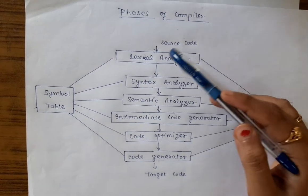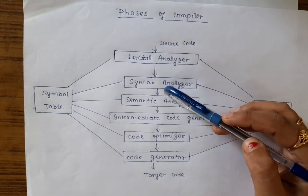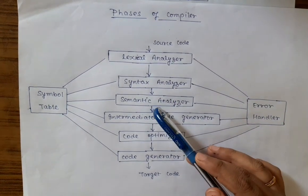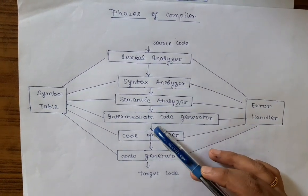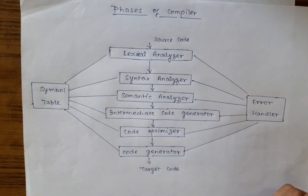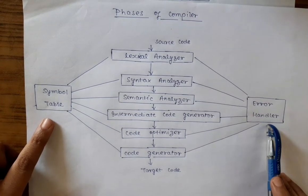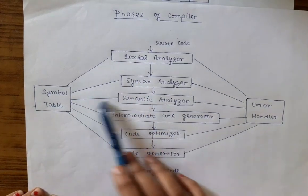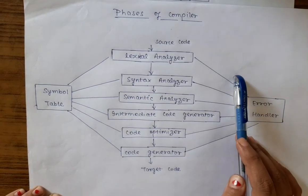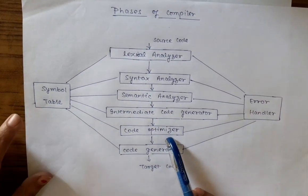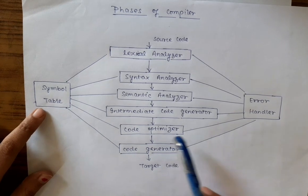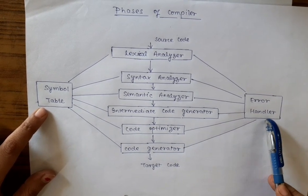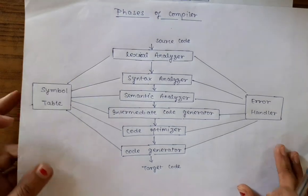Each phase takes the input from its previous phase and produces the output. This output is treated as the input of the next phase. Symbol table and error handler are the two more modules that interact with all the phases of the compiler. Symbol table is used to store the data and error handler is for handling the errors.